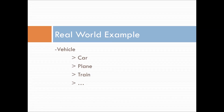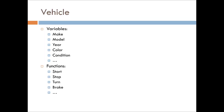So let's go into the real-world example first to get a familiar concept of inheritance. We have Vehicle, and then Car, Plane — I added Train here as another derived vehicle. For the purposes of this example, Vehicle has variables like make, model, year, color, condition, and then functions: start, stop, turn, brake, and whatever else is core to a vehicle.